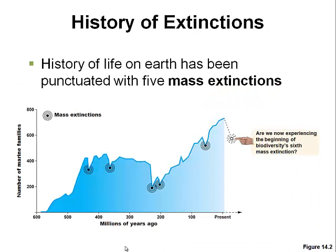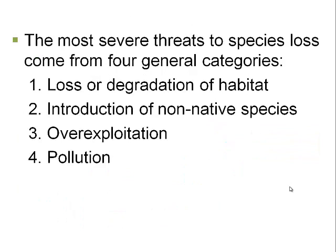We now want to turn our focus to extinctions and why animals go extinct. Looking at the history of the world, we see that there have been several mass extinctions — here represented from 600 million years ago to the present, with circles representing each mass extinction event. The question is: are we now headed towards a sixth extinction? And the bigger question is: are humans responsible for that? We weren't present for those earlier extinctions. But today, are we driving organisms to the point of extinction? We'll take a look at the primary reasons organisms become extinct as a result of human activity in our next lecture.